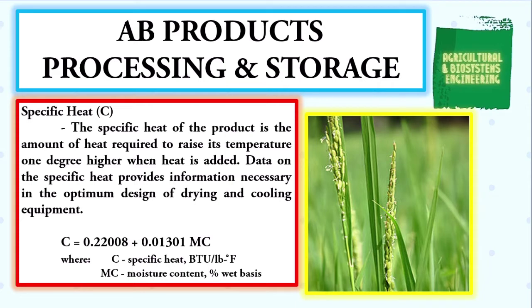Data on the specific heat provides information necessary in the optimum design of drying and cooling equipment. The formula to solve for the specific heat is C equals 0.22008 plus 0.01301 times MC, where C is the specific heat in BTU per pound degree Fahrenheit, MC is the moisture content in wet basis. We will be using the formula for specific heat to help solve our problem.